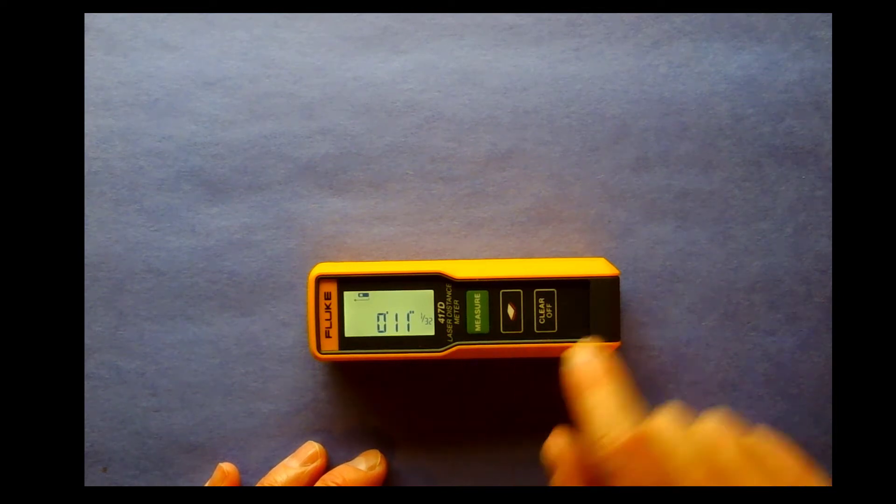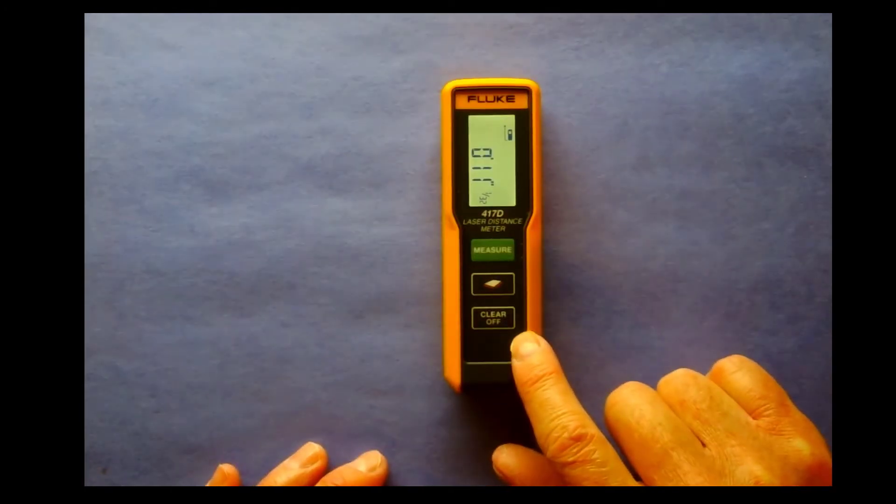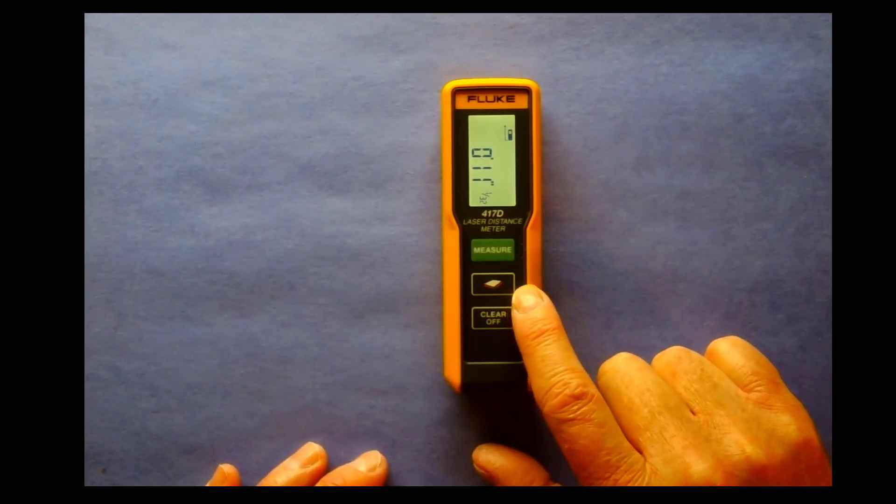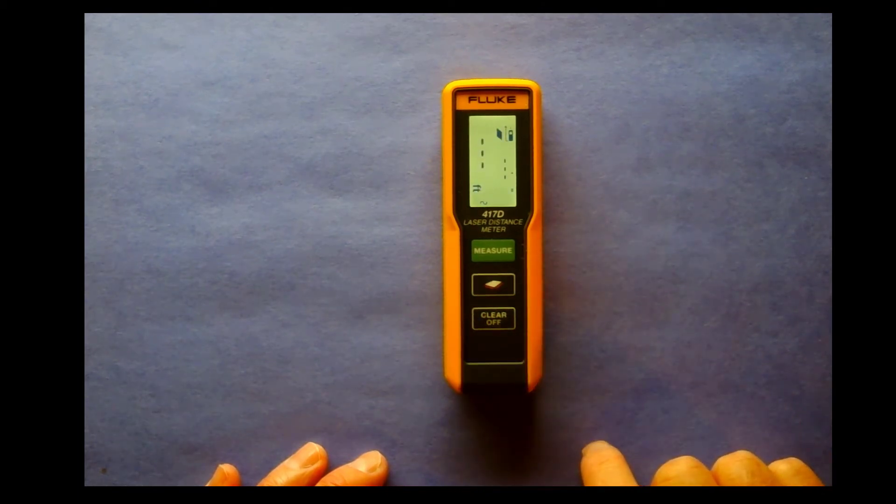There are three buttons. As you can see, we have the measure button, the off button, and the square button. What's the square button do? It puts you into the square footage mode.